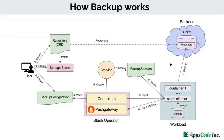Let's see how workload backup works in Stash. Here you can see a backend — it can be a cloud bucket such as an S3 bucket or Azure container, or it can also be a Kubernetes volume or NFS server. This backend is where the backup data is stored. The user creates a storage secret containing the access credentials for the backend, and then creates a repository CR which contains the information about the backend.